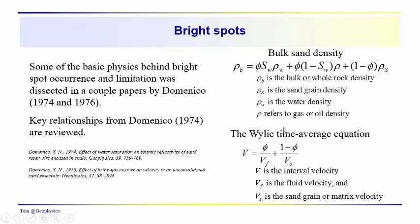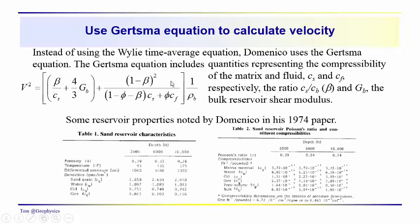He does not use the Wylie time average equation. Instead of the Wylie time average equation, he uses the Gertzma equation. Now, the Gertzma equation is shown here, and you can see that it has terms like beta, which is the ratio of the compressibility of the sand to the bulk compressibility. The compressibility is of the sand and the fluid. So this is beta, this quantity here. The G sub B is the bulk reservoir shear modulus. And, of course, phi is porosity and so on.